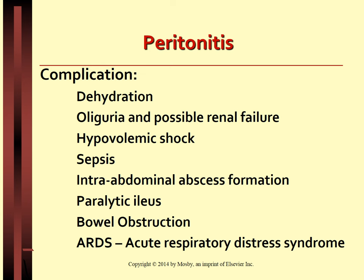Massive fluid shift and third spacing can cause fluid to escape from the extracellular fluid compartment into the peritoneal cavity, connective tissues, and the GI tract. Peristalsis slows or stops in response to the peritoneal inflammation and distension of the intestinal lumen with gas and fluid, referred to as a paralytic ileus or adynamic bowel.